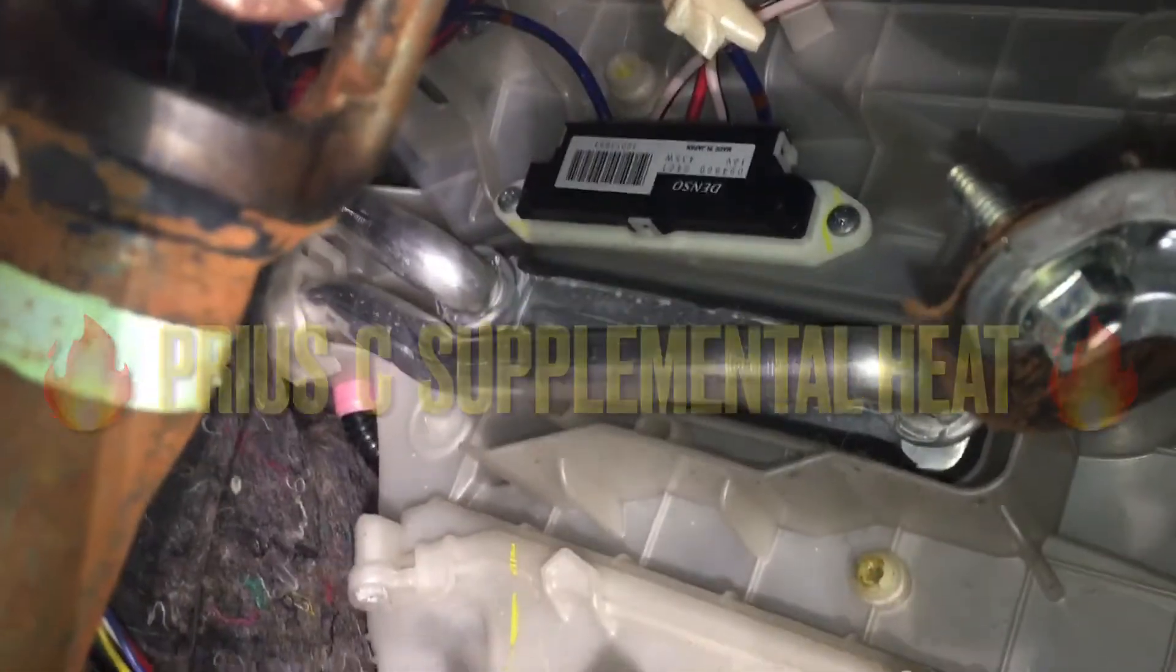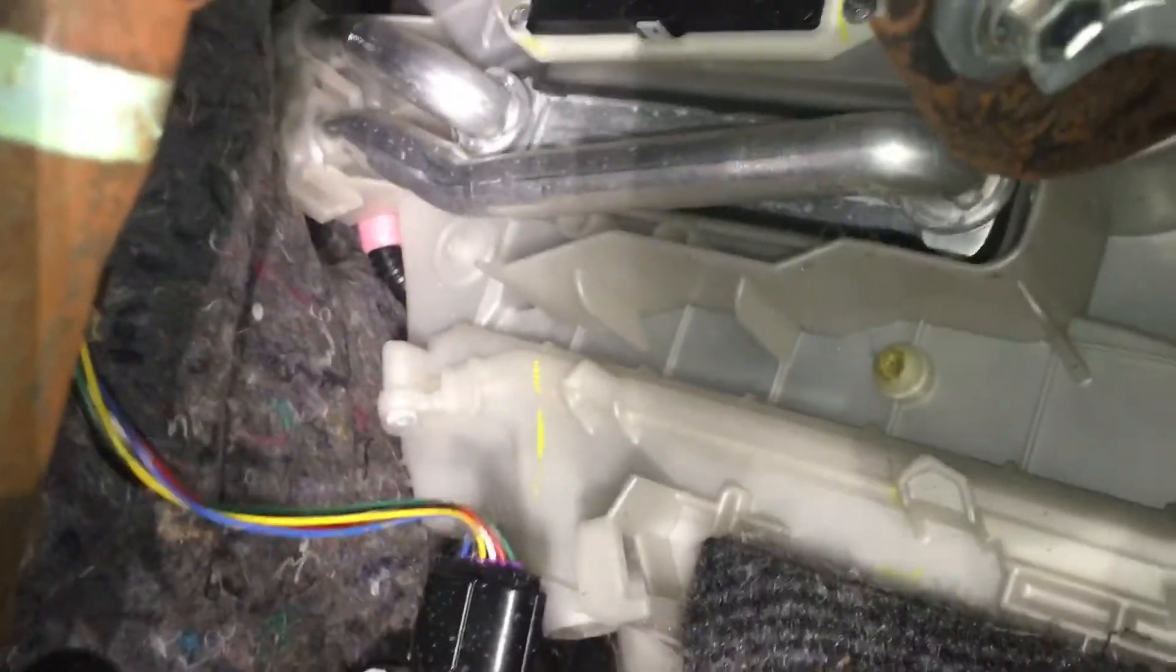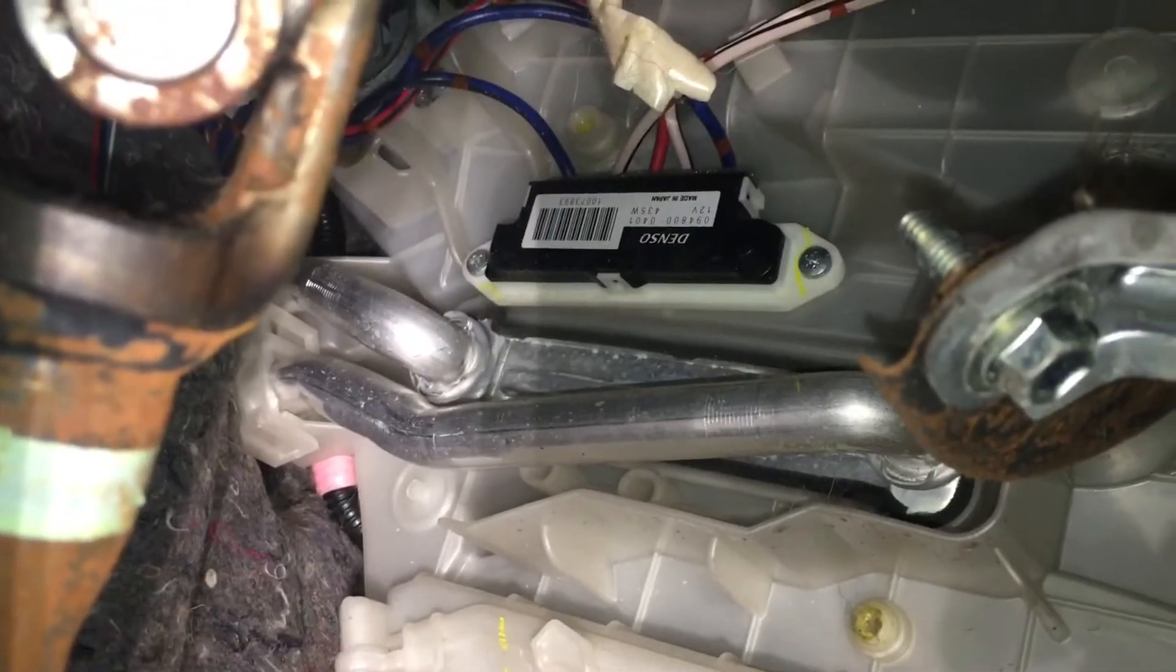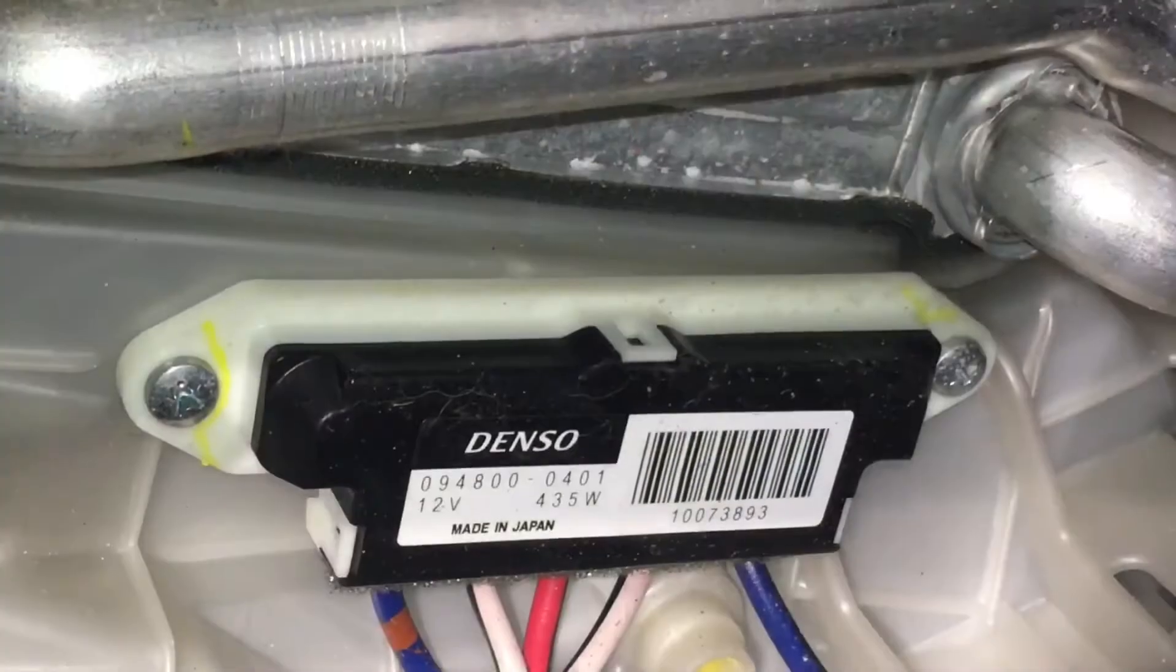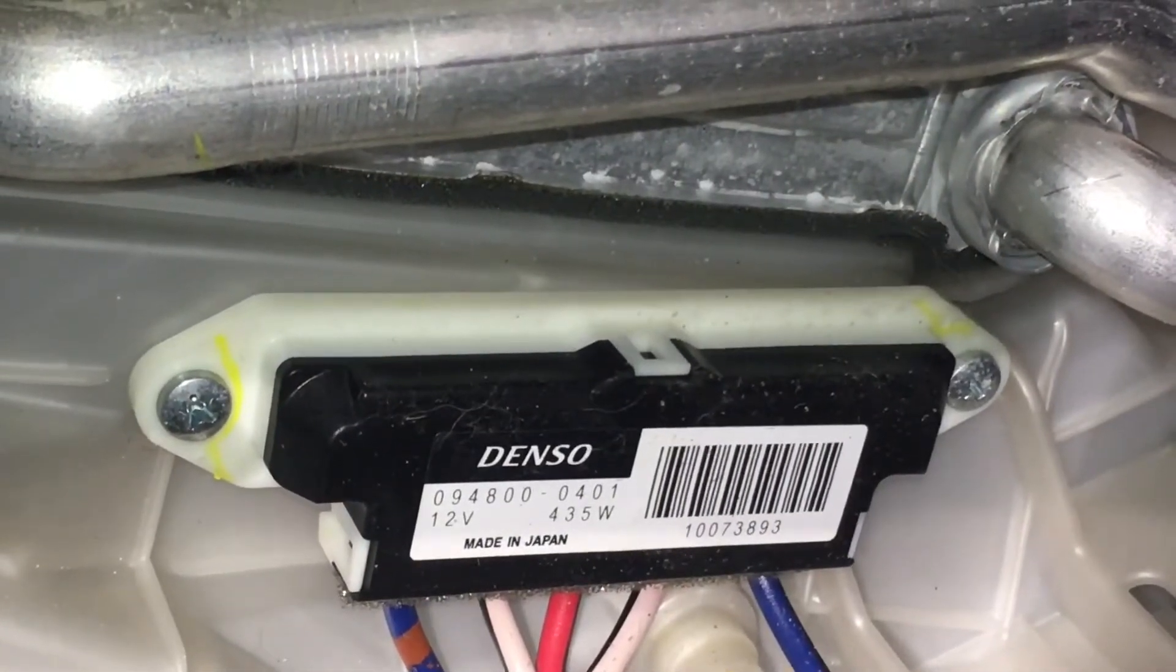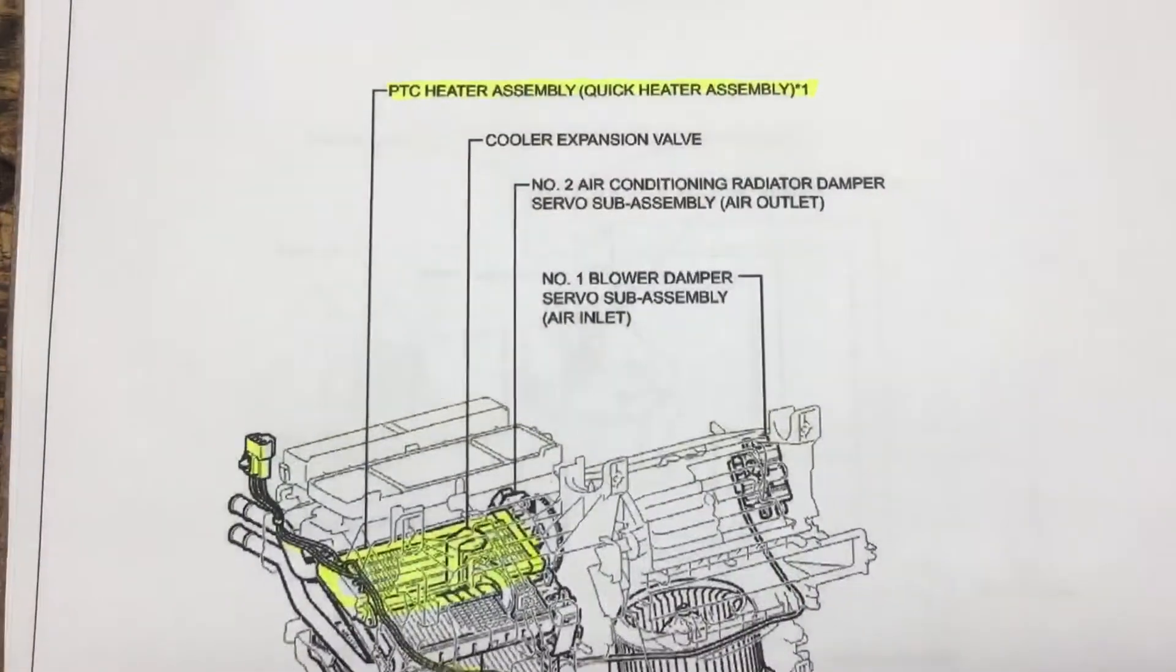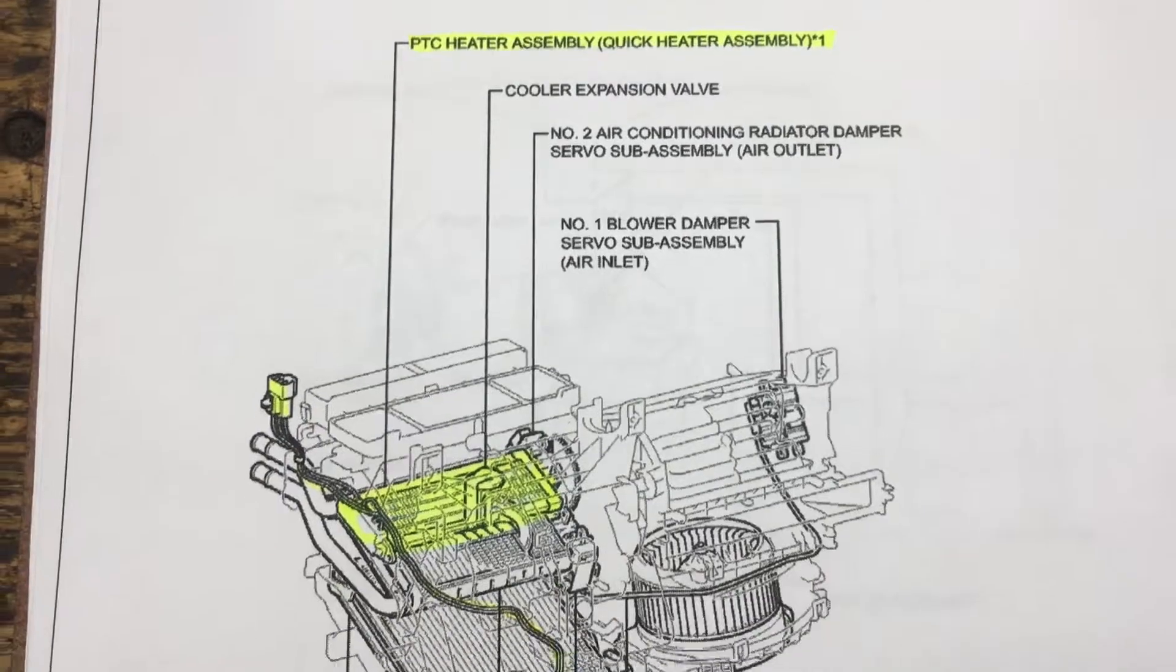I asked myself what the hell is that? It's clearly the heater matrix, the evaporator coil would be in the stack there, and then there's this rig here - 12 volts, 435 watts. What's that? Well, some of you will know fine well what it is guys, right? Of course, it's the PTC heater.